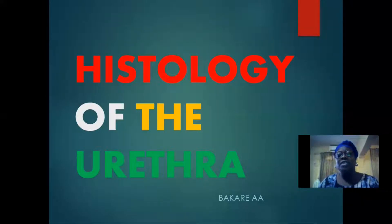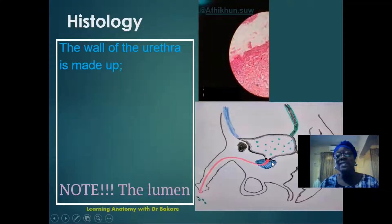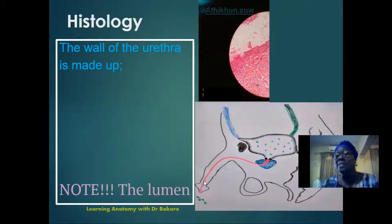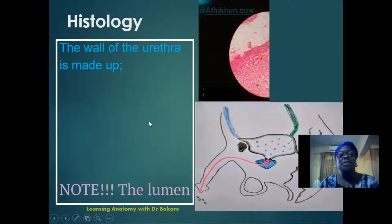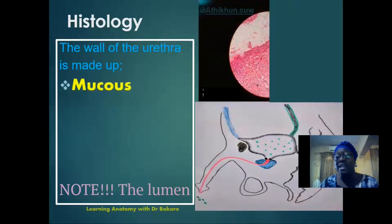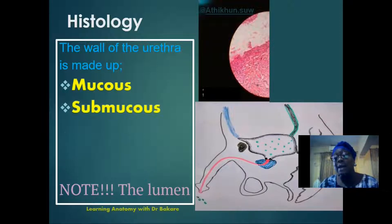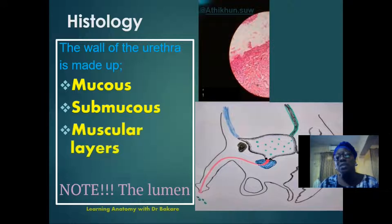Let's look at the histology of the urethra. The urethra is a tube that allows the transportation of urine stored in the urinary bladder to be emptied outside of the body. In this lecture, we'll be focusing on the histology of the urethra. The urethra is made up of three subdivisions: the mucous membrane layer, the submucosal layer, and the muscular layer.